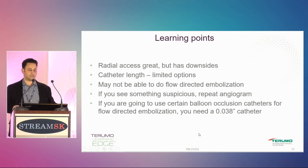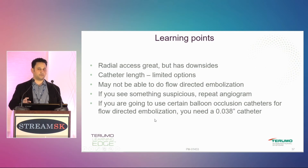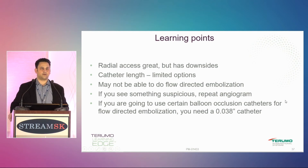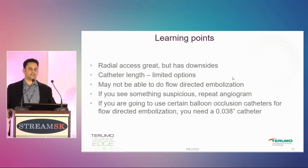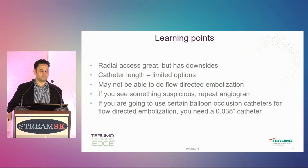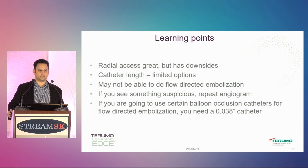The learning points: radial access is great and I'm a proponent of it, but for prostate embolization you really have to choose your patients carefully — arm length, overall height. When patients say they used to be six feet but are now 5'9", I'd still go with the six-foot estimate because their aorta isn't going to be tortuous. Right now we have limited catheter lengths unless you get into neural catheters, which are expensive. You may not be able to do flow-directed embolization just because of catheter length, since even the longest are 150 centimeters. If you see something suspicious, repeat an angiogram, stop embolization, and do another run — it's not the stuff you see initially but what appears partway through embolization that matters.